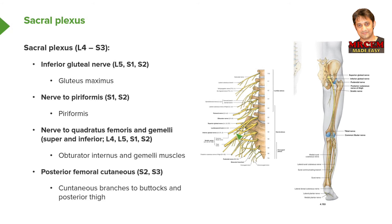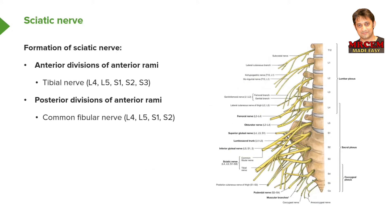There is also a nerve to piriformis from S1 and S2, which is a small nerve that just supplies piriformis. The nerve to quadratus femoris and the superior and inferior gemelli come from L4, L5, S1 and S2 — very small nerves that pass directly to these muscles. We also have the posterior femoral cutaneous nerve, which runs alongside the sciatic nerve and contains cutaneous branches for the buttock and posterior thigh, coming from S2 and S3.